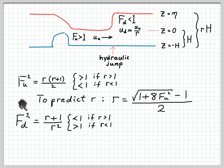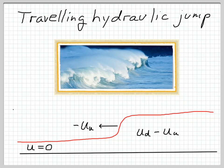We can also find an expression for the downstream Froude number. It's r plus 1 over r squared. If you analyze that function, you find the reverse of the upstream Froude number. The downstream Froude number is less than 1 if r is greater than 1 and greater than 1 if r is less than 1. So upstream of the hydraulic jump, Froude number will be greater than 1. Downstream, Froude number will be less than 1.